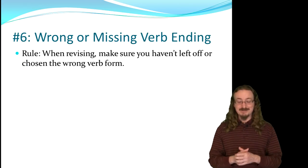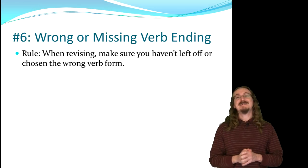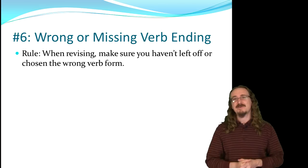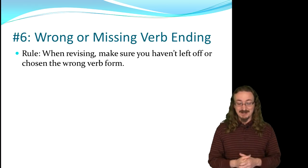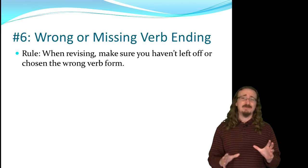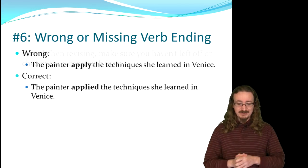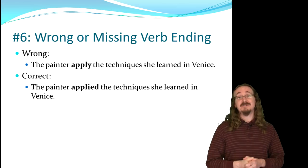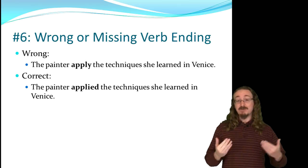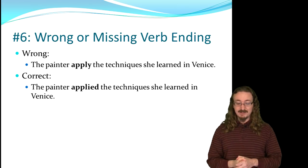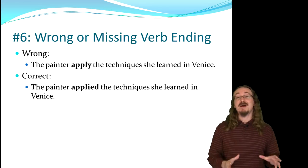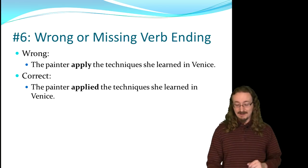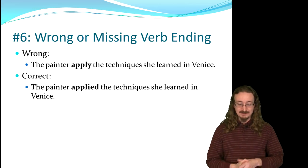Number 6: wrong or missing verb ending. This often happens when you revise — you change something earlier in your essay and accidentally put the wrong verb in. For example, 'the painter apply the techniques she learned in Venice' should be 'the painter applied the techniques.' Be very mindful when revising to go back and proofread to make sure you haven't put the wrong verb ending on any of your verbs.